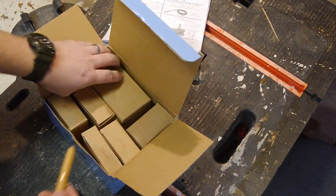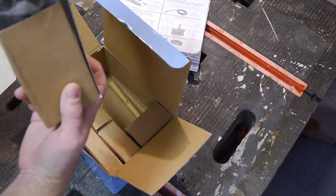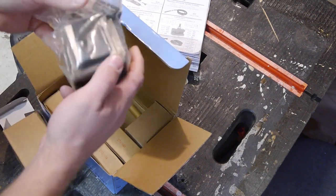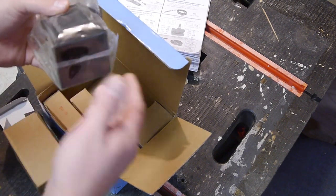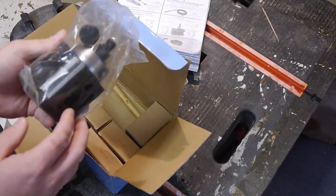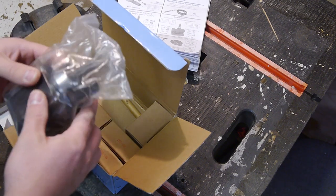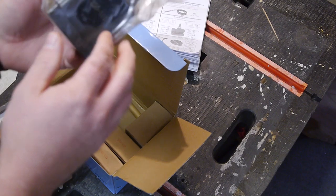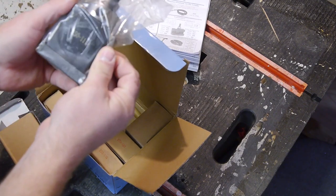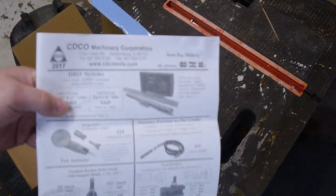So I thought I'd do a quick unboxing of this and show what I'm going to have to do to get this thing to work. Because honestly, I have no idea how I'm going to get this to work on my Grizzly G4000. But we're going to try. This is the wedge style, a 250-11, whatever that is. And it came from CDCO Tool Machinery Corporation.